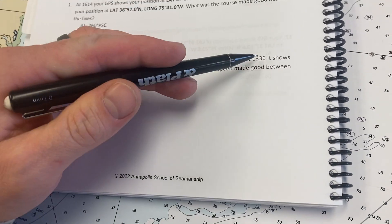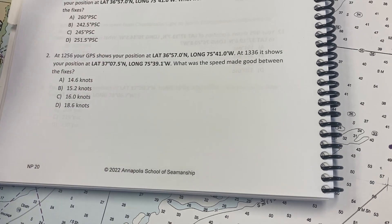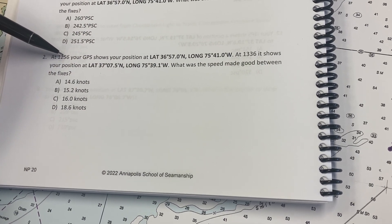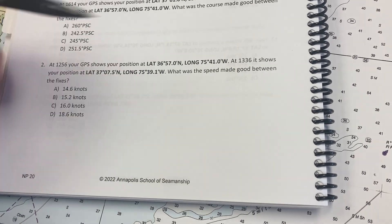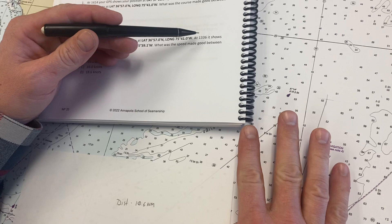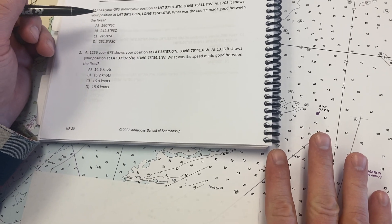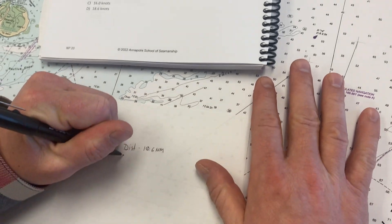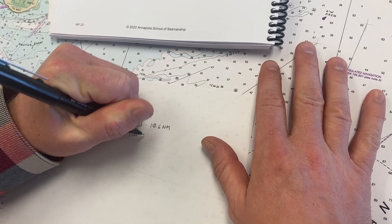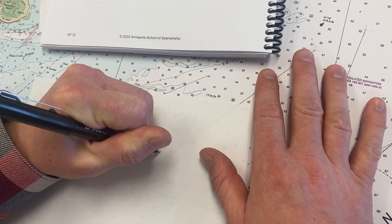We need to figure out the time difference between these two points. We had 1256 to 1336. So we had four minutes until we hit one o'clock. I'm going to take the four minutes, hold that, and then add four minutes to 36 minutes. That comes out to 40 minutes. So our time is 40 minutes.